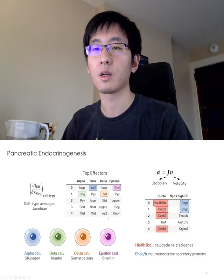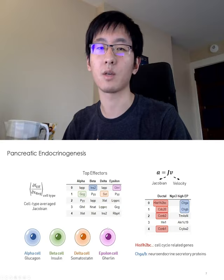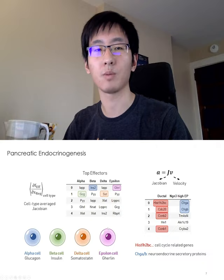Usually, you won't be able to see such results if you rank the genes based on either the velocities or the expression patterns, since some other highly expressing or housekeeping genes would dominate the ranking. We have also other ranking modes like top regulators or top gene-gene interactions, but for the sake of time, I won't be going over them today.